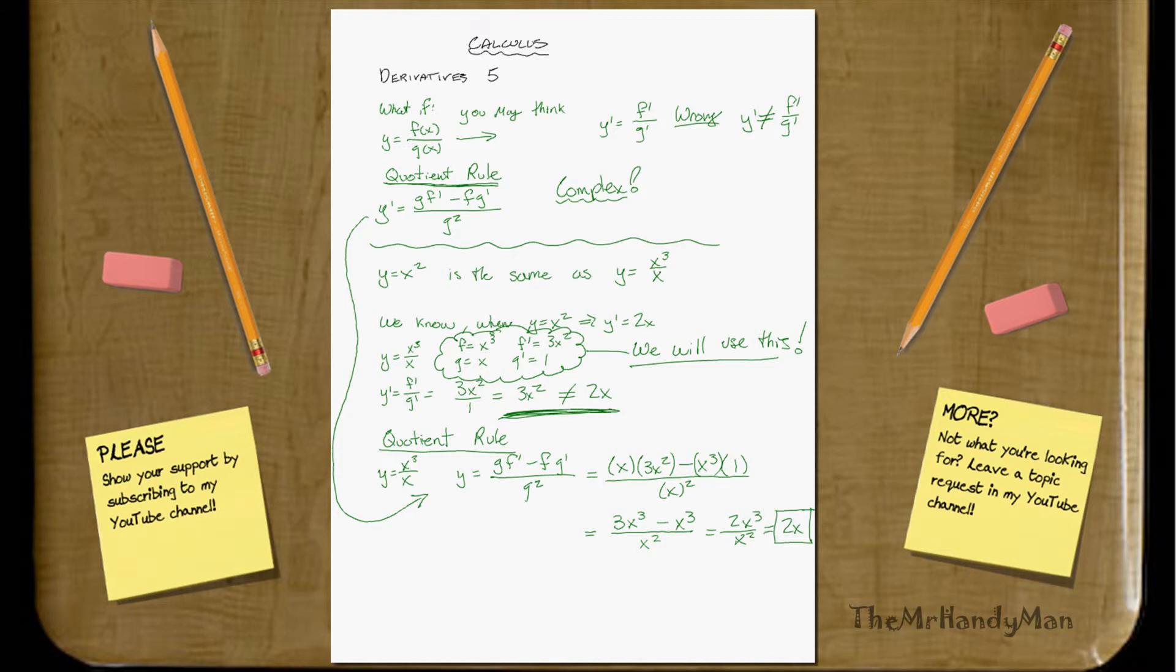It works out nicely, doesn't it? So while the quotient rule really looks complex, it's important to realize that, once again, it's just like the product rule. The system makes it easy.